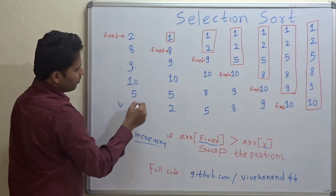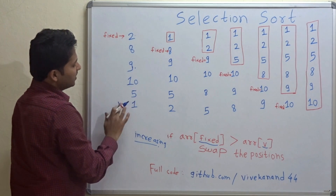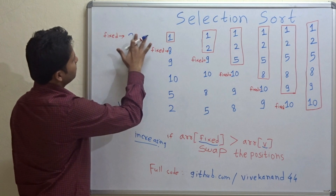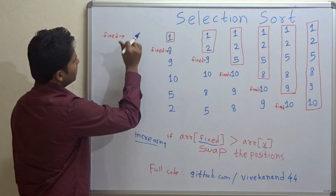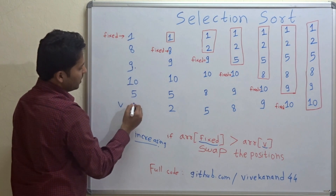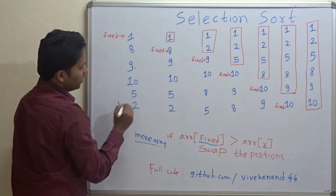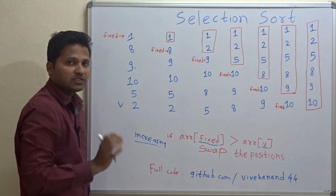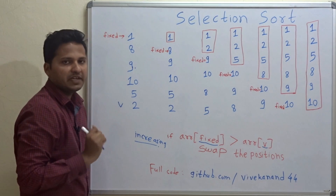Now 2 is compared with 1. Since 2 is greater than 1, they will be swapped. 1 will come here and 2 will come here. And thus the first iteration ends.